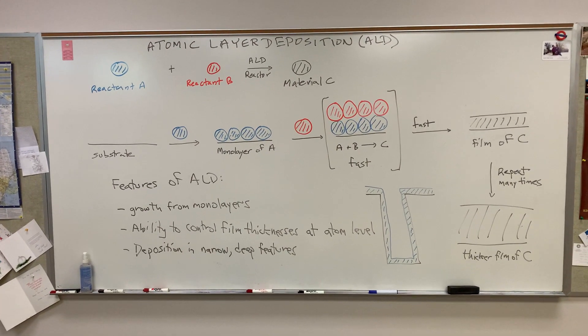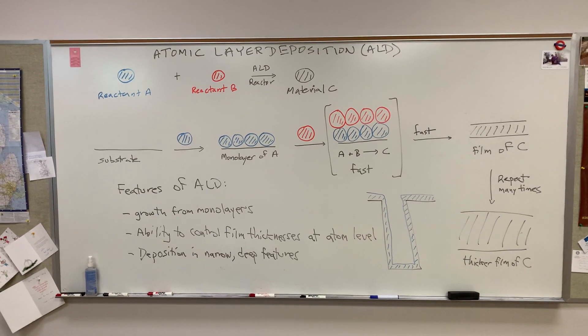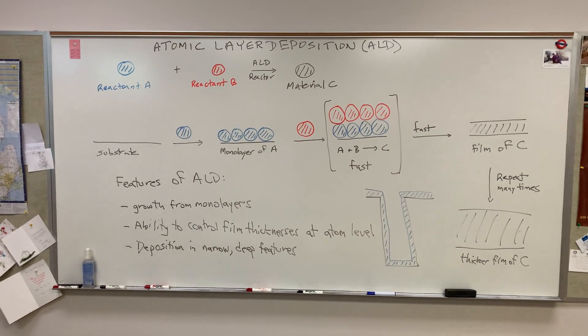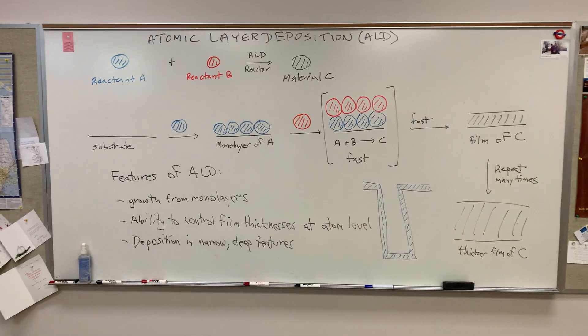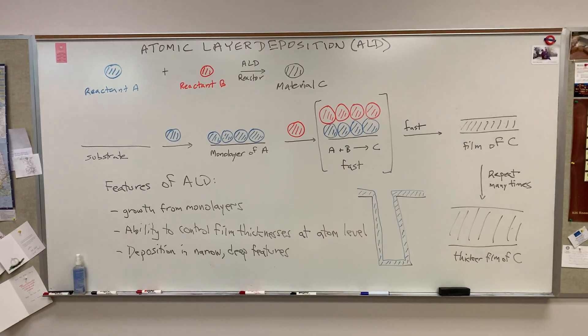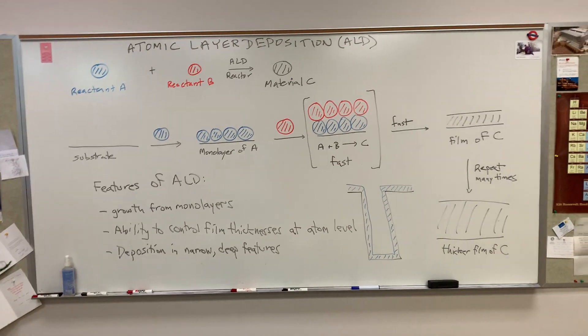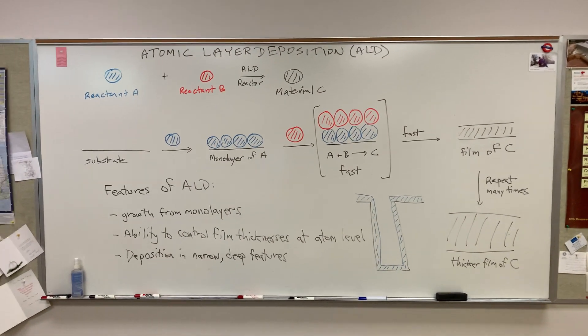And in the first step, what we do is we take a bare substrate and treat it with reactant A in blue. And the key feature of ALD is that we form a monolayer of A on the surface of the substrate. And we don't form multilayers, just monolayers.